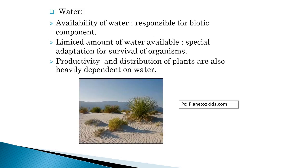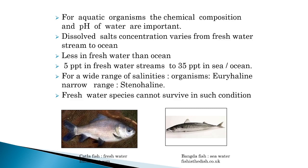The next abiotic factor is water. The availability of water is responsible for the biotic component. A limited amount of water available requires special adaptations for the survival of organisms. The productivity and distribution of plants also heavily depend on water. For aquatic organisms, the chemical composition and pH of water are important. Dissolved salt concentration varies from freshwater streams to oceans — less in freshwater than in oceans, around 5 ppt in freshwater streams to 35 ppt in the sea. Organisms tolerating a wide range of salinities are called euryhaline, and those tolerating narrow ranges are called stenohaline. Freshwater species cannot survive in high-salinity conditions.